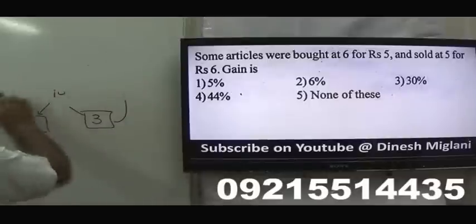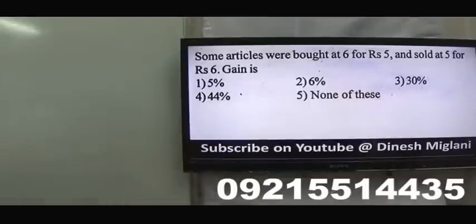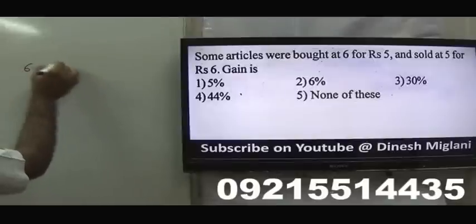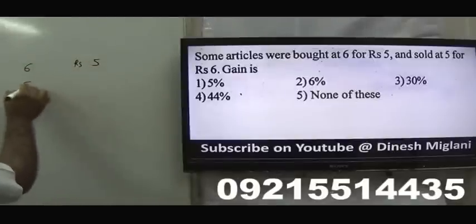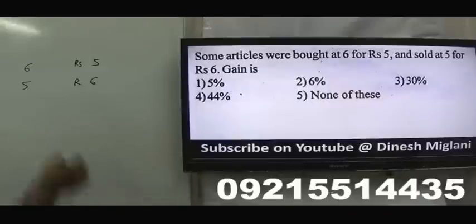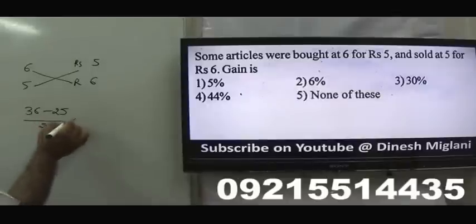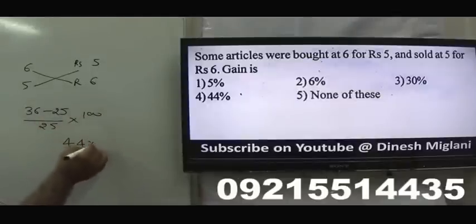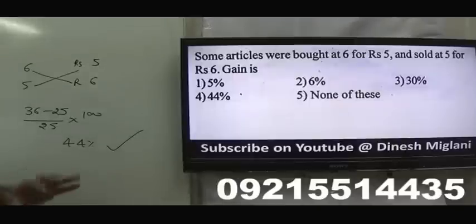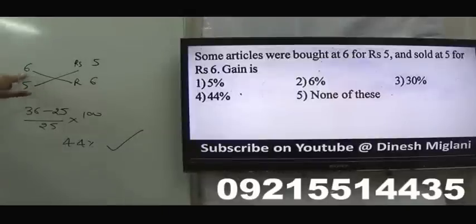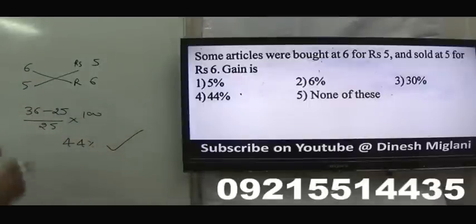Some articles are bought at 4 for ₹6 and sold at 6 for ₹4. Wait — articles bought 6 for ₹4 and sold 4 for ₹6. Using the shortcut: (36 − 25) / 25 × 100 = 44%. Answer is 44% gain. If the result is negative it means loss; here it is positive so 44% profit.